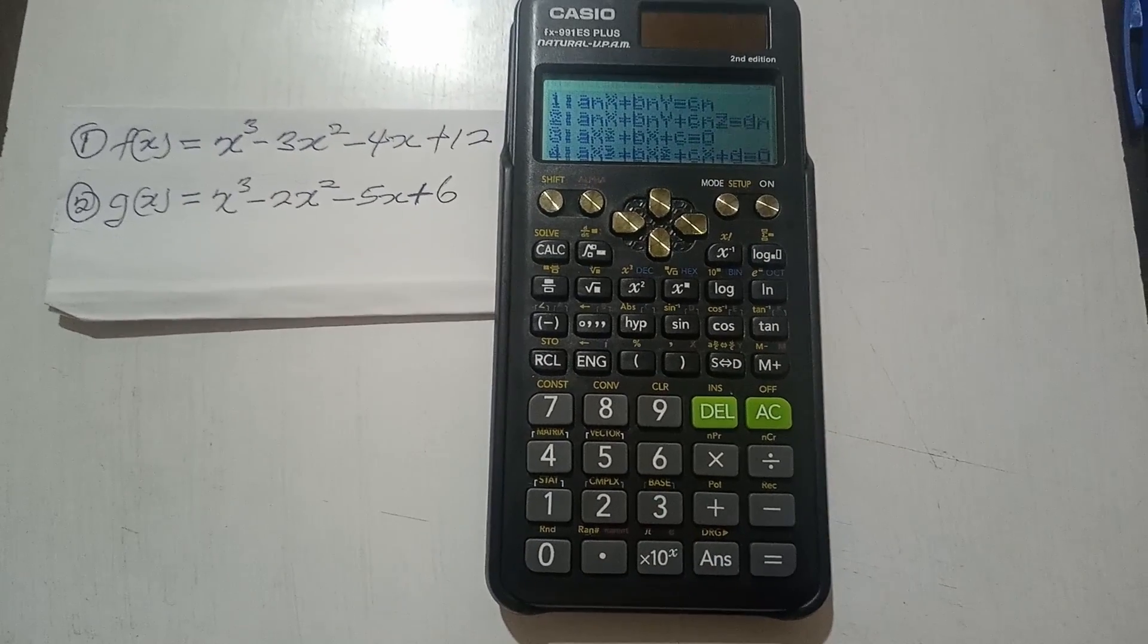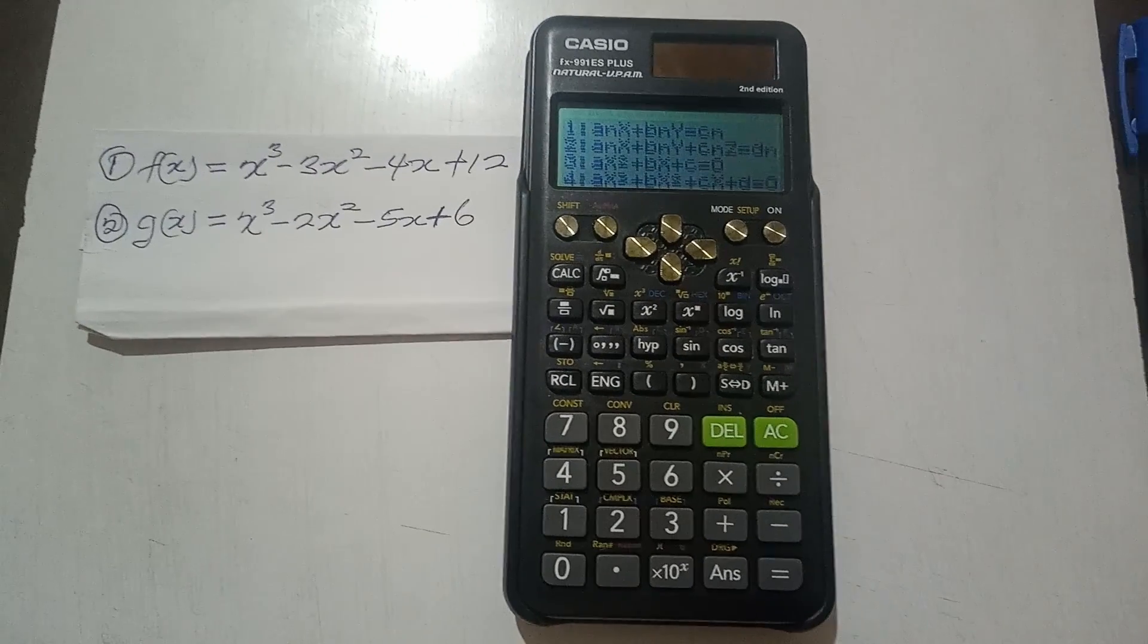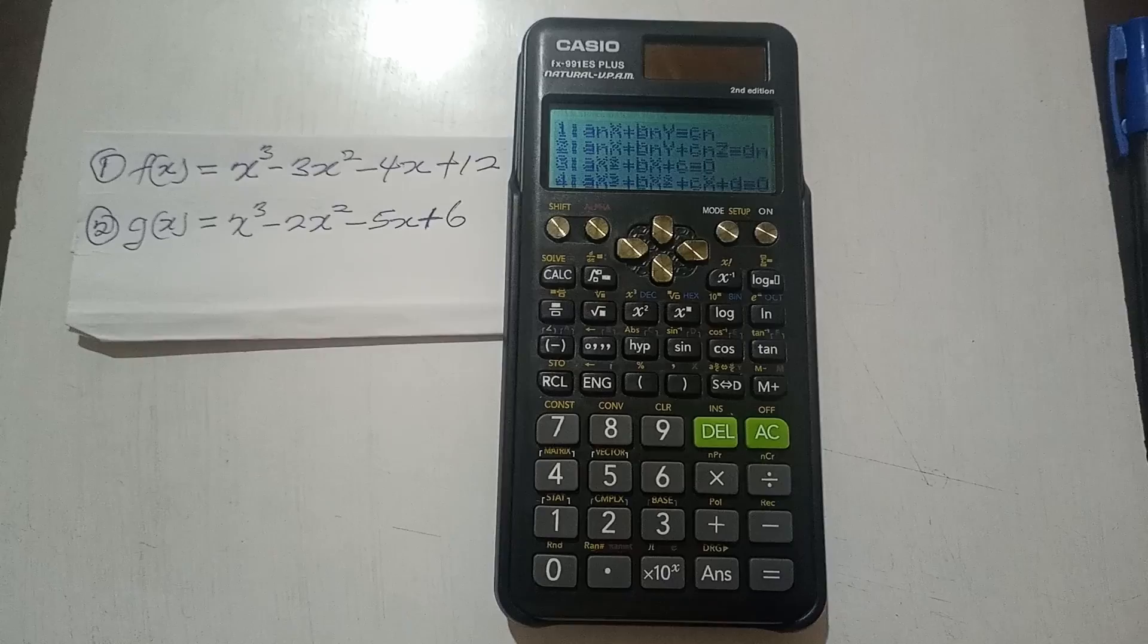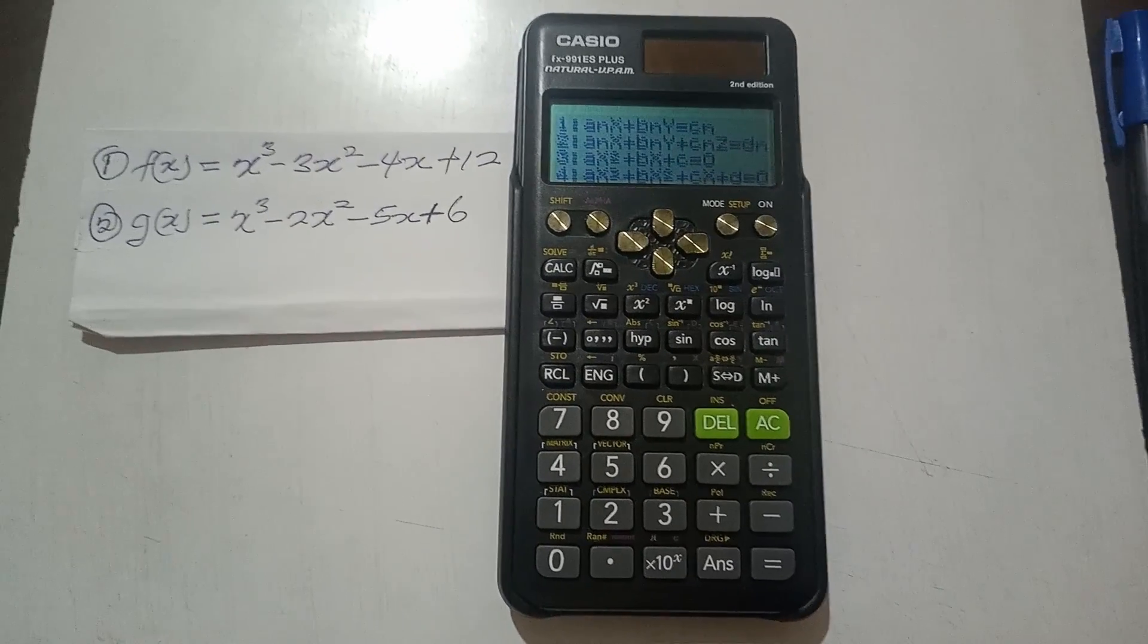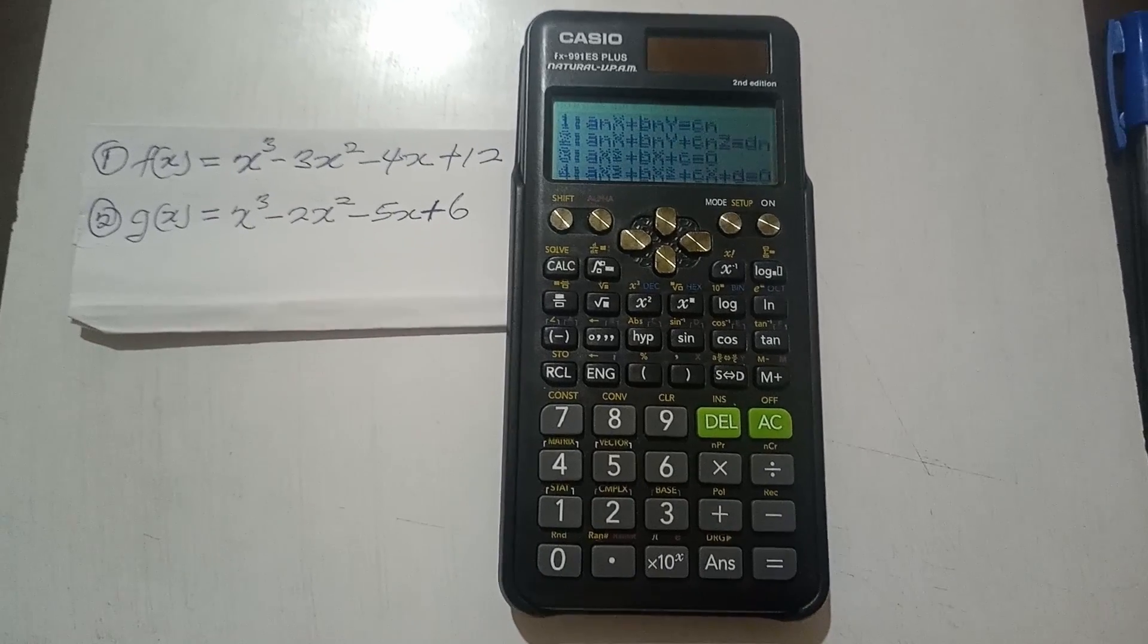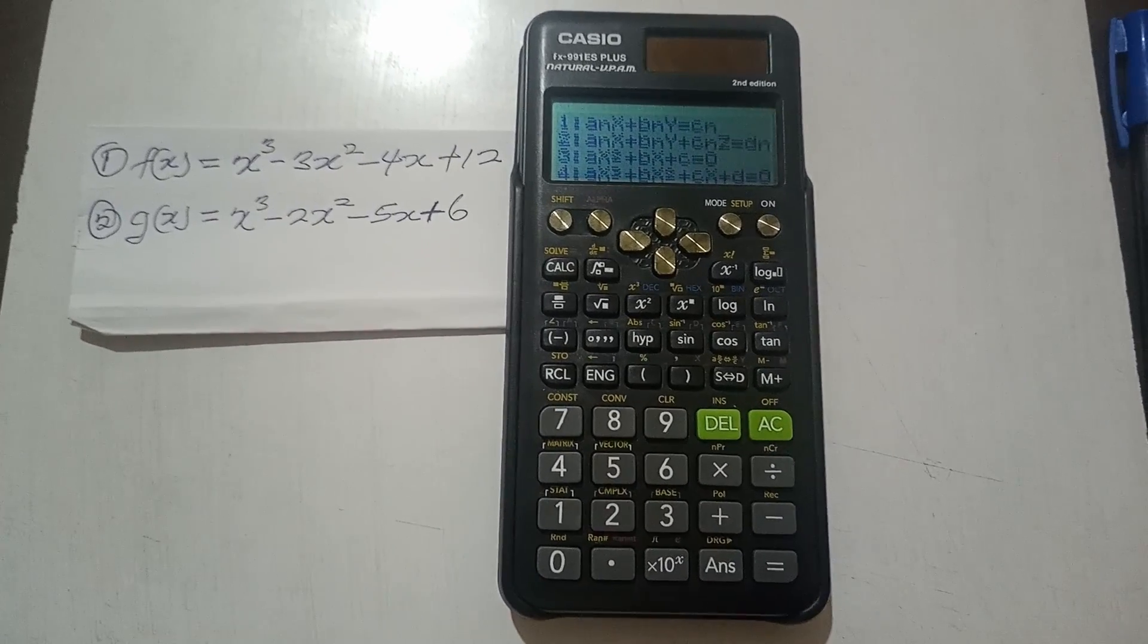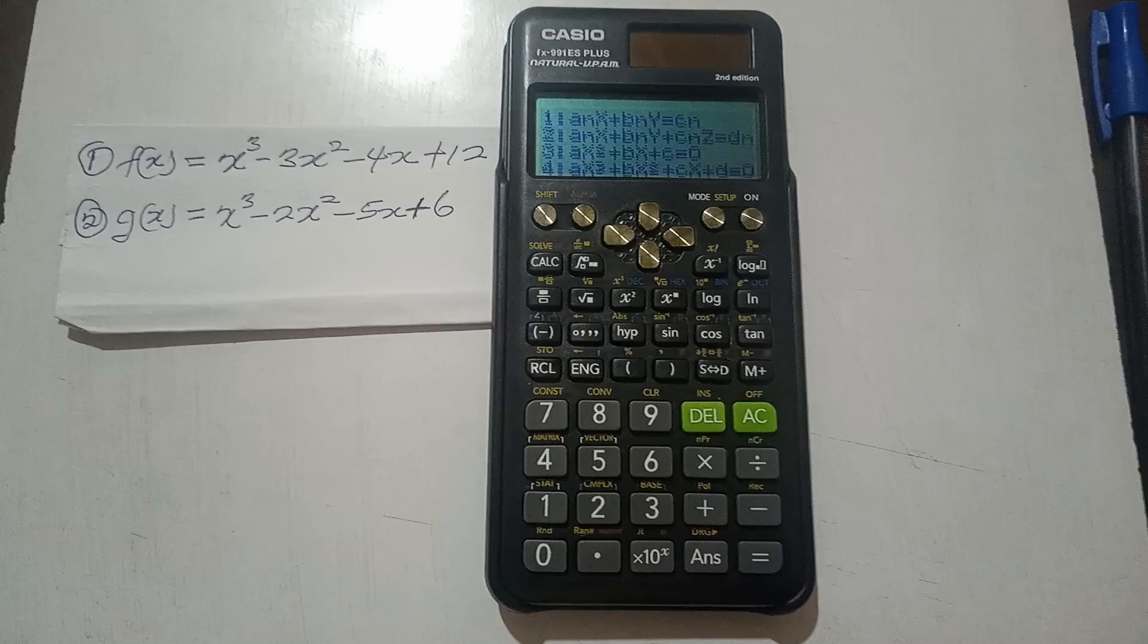Then now we look for cubic function. Cubic function is a function with the highest degree as 3, or in other words, it's a function of the form a*x³ + b*x² + c*x + d = 0.